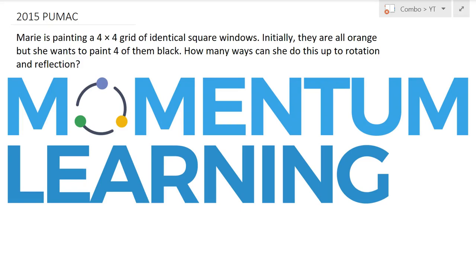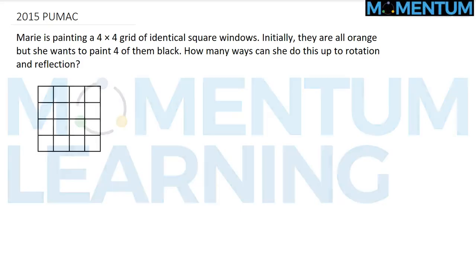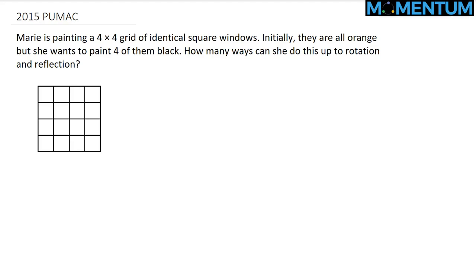Consider the following 2015 Princeton University math contest problem. We are given a 4x4 grid and we would like to paint 4 of the 16 little squares. How many different shapes can we get up to rotation and reflection?